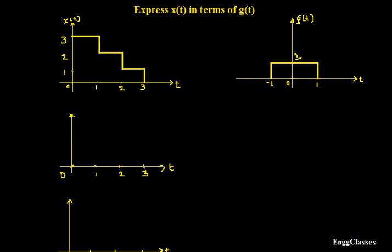Hello everyone, I welcome you all for today's lecture on signals and systems. In this video we will consider the concept of operations on signals. The task is to express the given signal x(t) in terms of g(t). x(t) exists from 0 to 3 and its highest amplitude is 3. The given signal g(t) exists from minus 1 to 1 and its amplitude is 1.